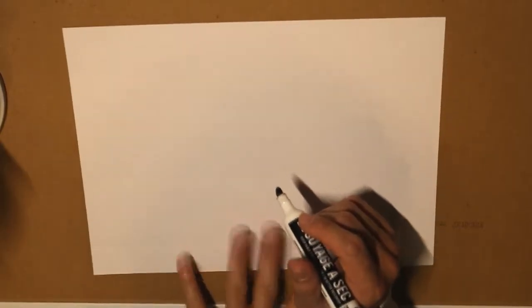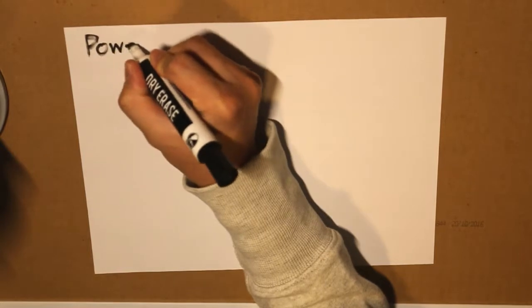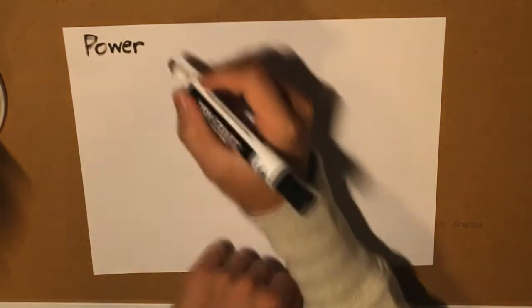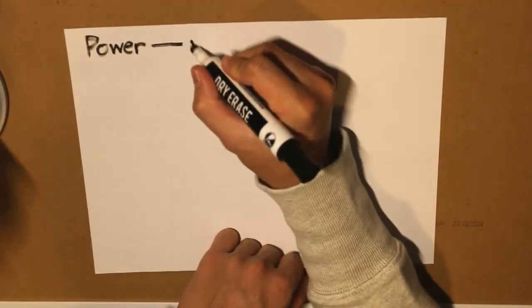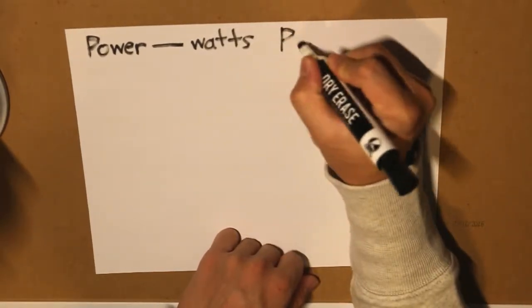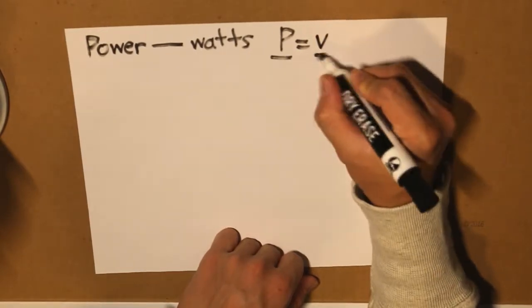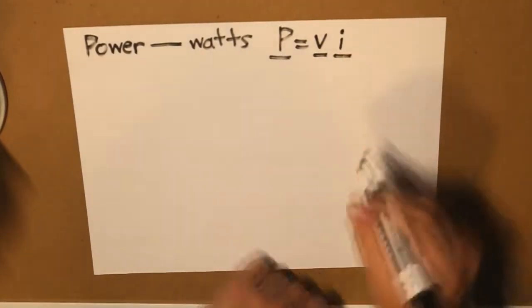So now let's define power. Power in electrical engineering is in watts, and that equation P, meaning power, is equal to voltage multiplied by current.